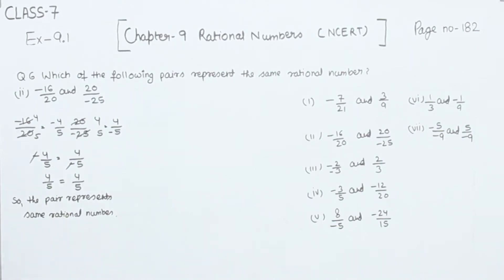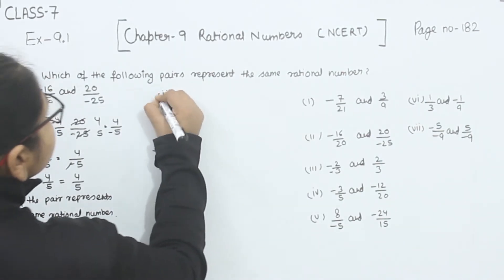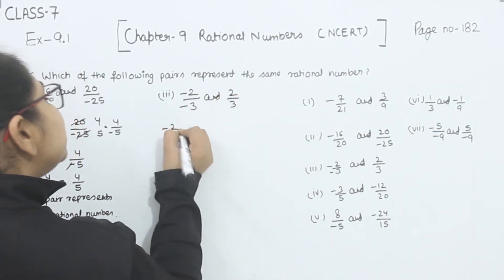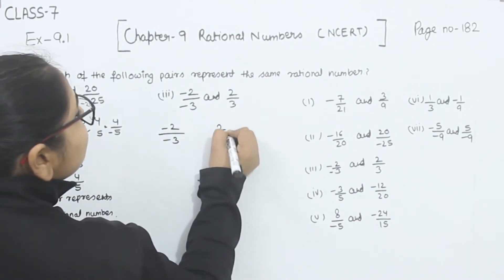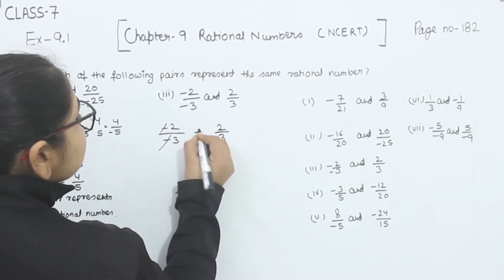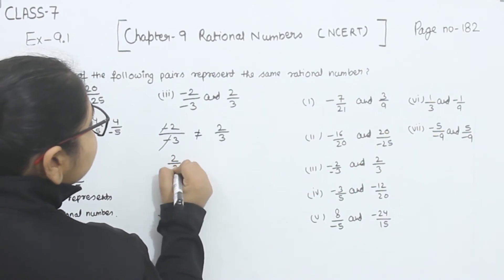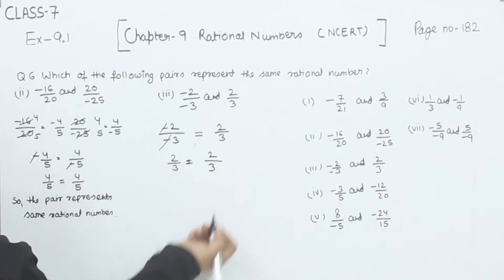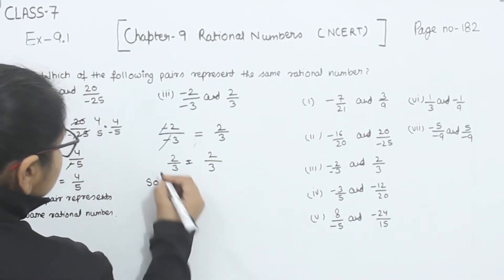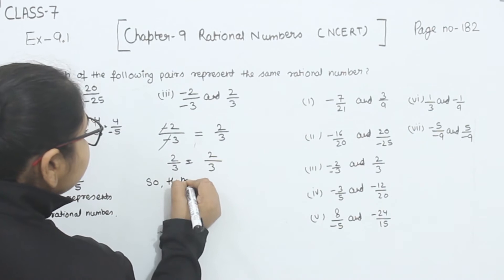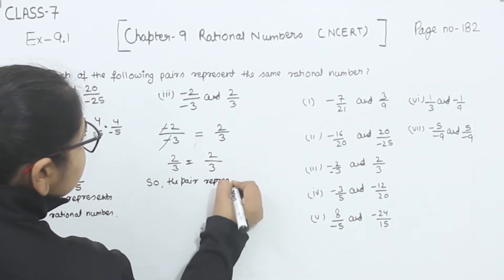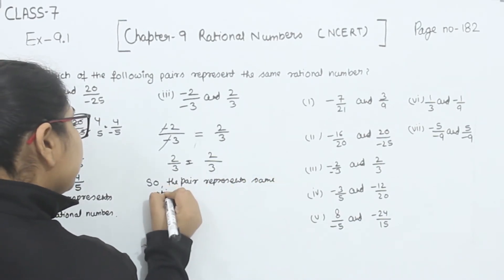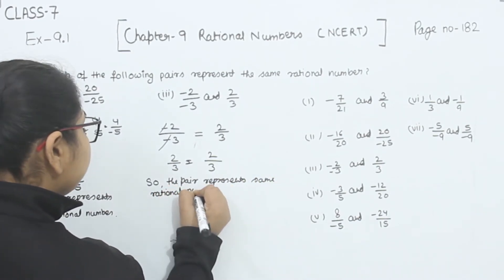Now comes part 3. We have minus 2 by minus 3 and 2 by 3. For minus 2 by minus 3, the negatives cancel, giving 2 by 3. So we have 2 by 3 and 2 by 3 — they are equal. Therefore, the given pair represents the same rational number.